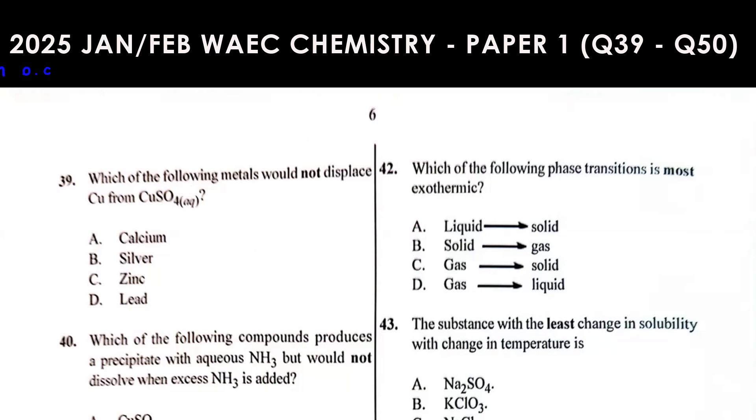Question 39: Which of the following metals would not displace copper from copper 2 tetrasulfate solution? For a metal not to displace copper, it means that metal is less reactive than copper. The metal that is lower than copper in the reactivity series and less reactive than copper is silver.